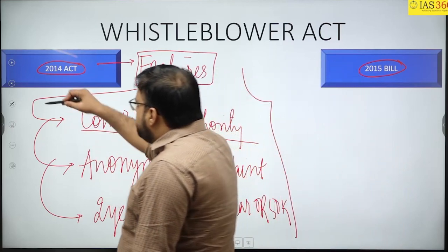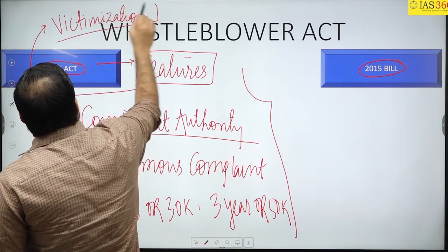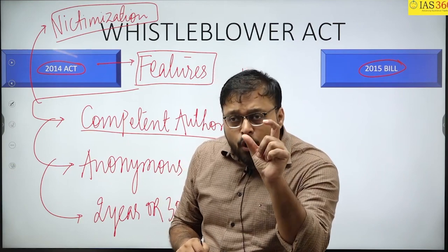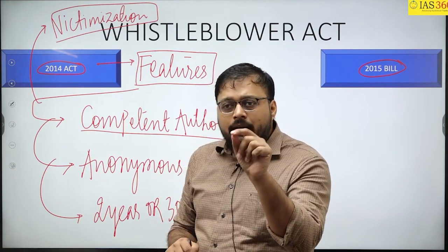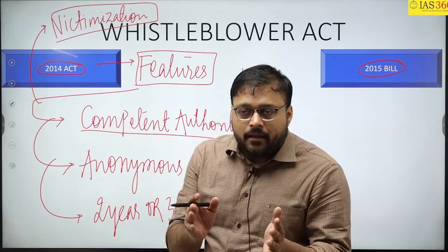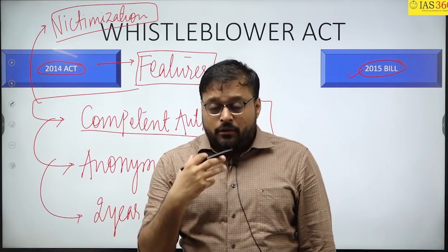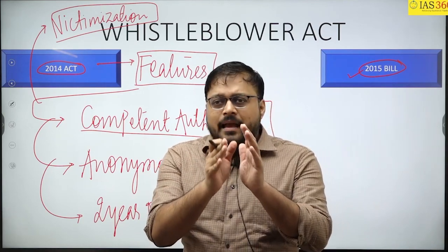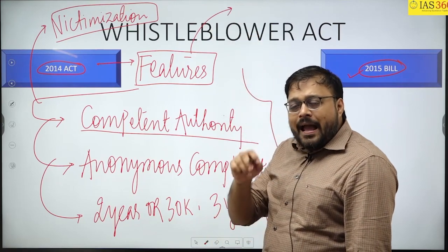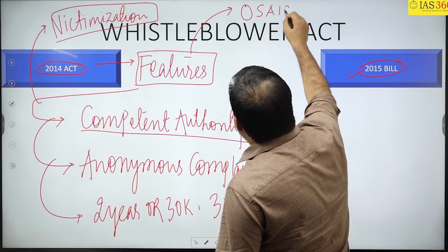The act also states that victimization of the whistleblower must be prevented. However, the problem with this act is that the scope of victimization has not been clearly defined, so it becomes too wide and loses its clear meaning. Now, before discussing the 2015 Bill, one important point: as per the 2014 Act, a whistleblower can reveal information even if that information is prohibited under the Official Secrets Act, 1923.